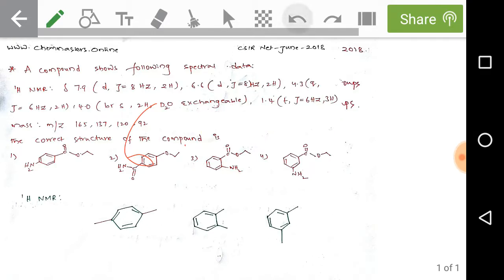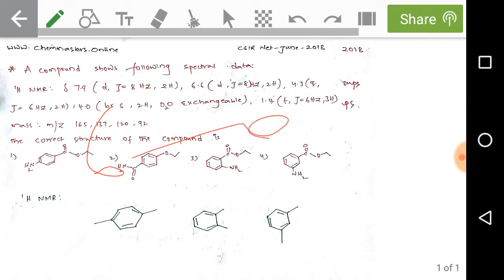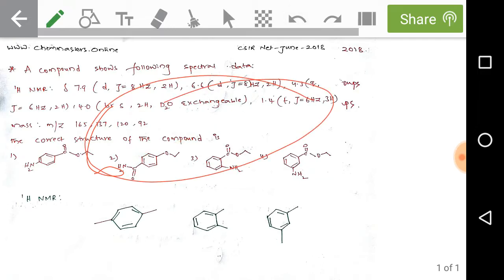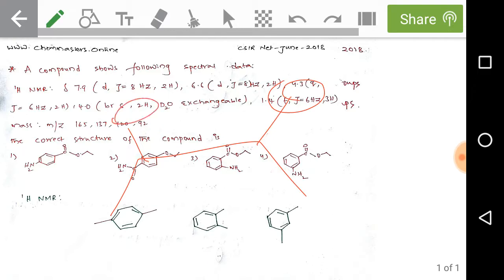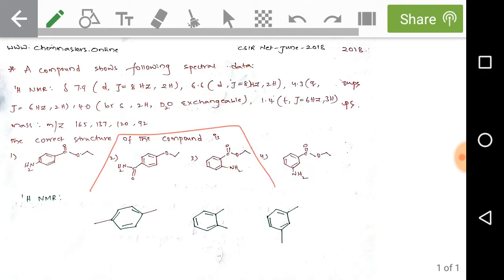From the options, all four have benzene rings. Next, check the coupling constant — J = 8 Hz. We know that from nearly 6 to 10–12 Hz, if the coupling constant is in this range, it simply indicates two HNMR active nuclei that are cis to each other. If J is between 12 to 18 Hz, the two nuclei are trans to each other. We also have doublets here, which simply indicate two adjacent protons.